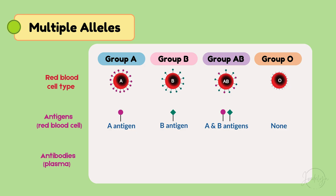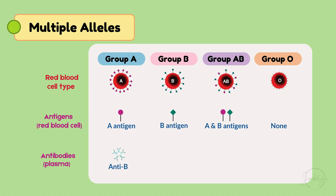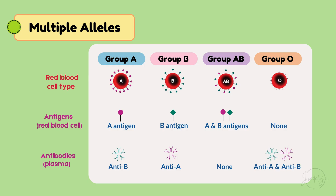Now let's talk about antibodies. Your immune system makes antibodies, which act like security guards — they recognize foreign antigens and attack them to protect the body. Type A has anti-B antibodies. Type B has anti-A antibodies. That's why O is the universal donor.